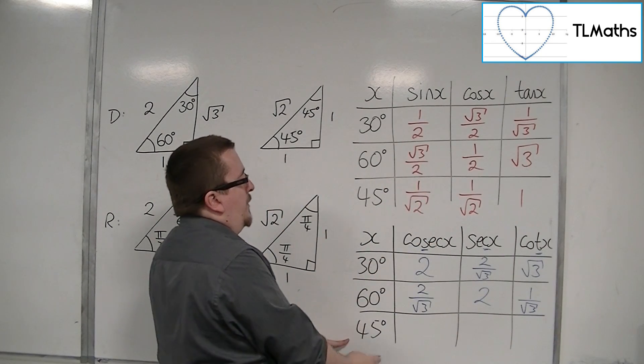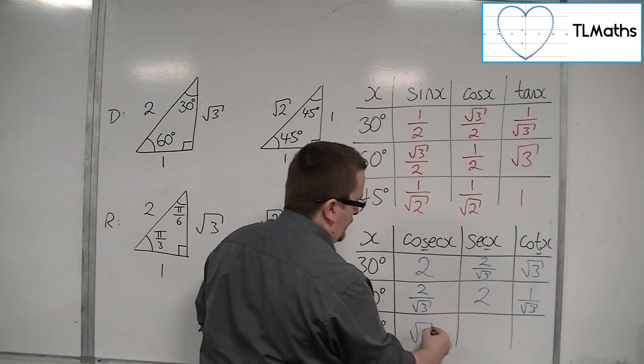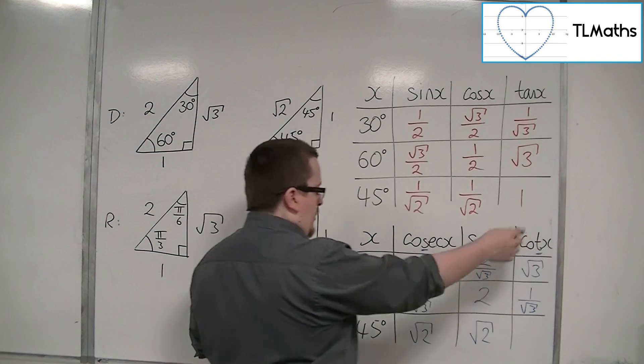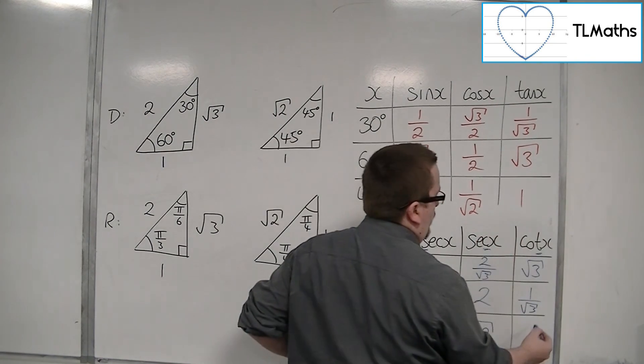Cosec of 45 will be root 2. Sec of 45 will also be root 2. And cot of 45 will be 1 over 1, so just 1.